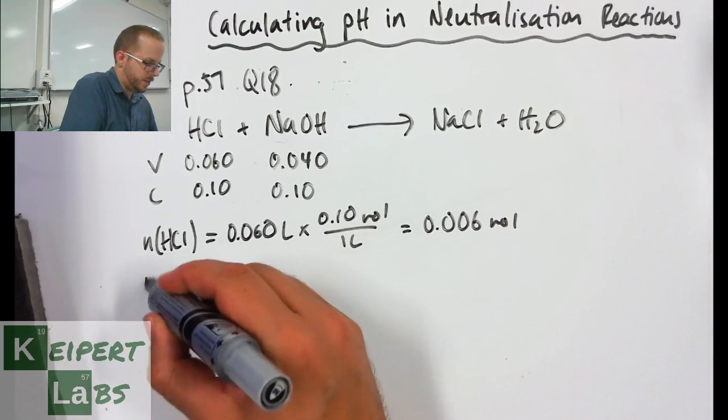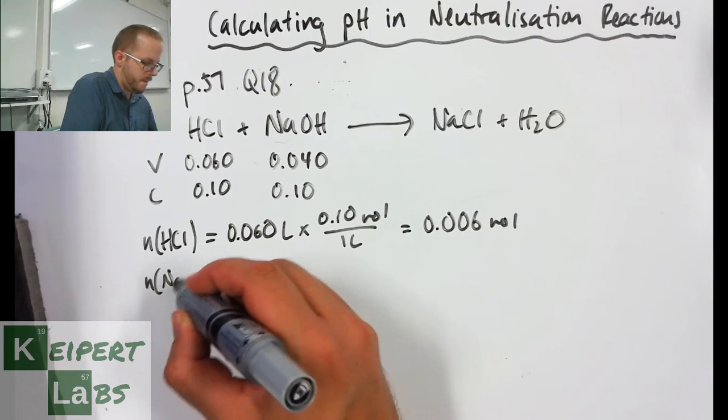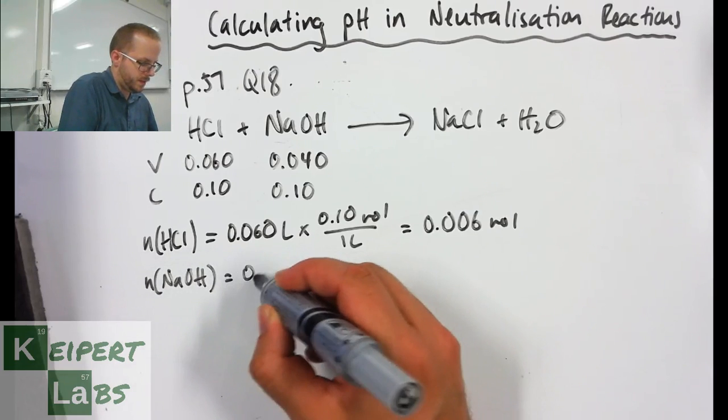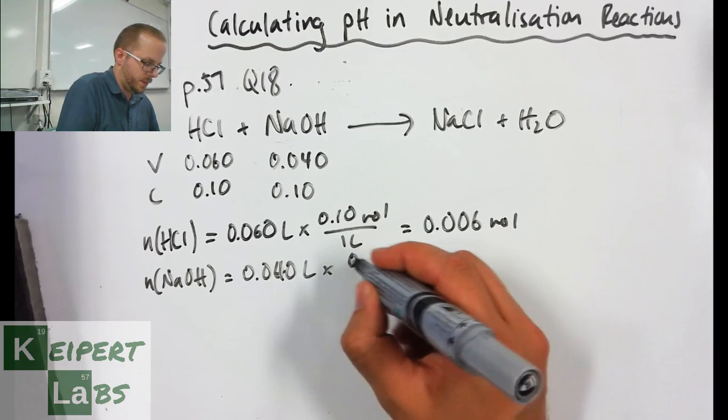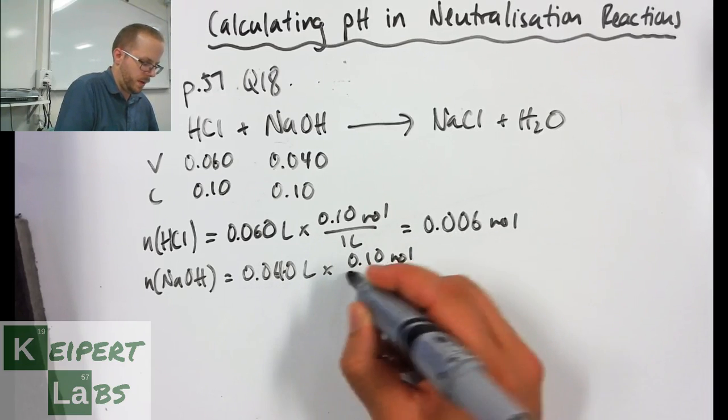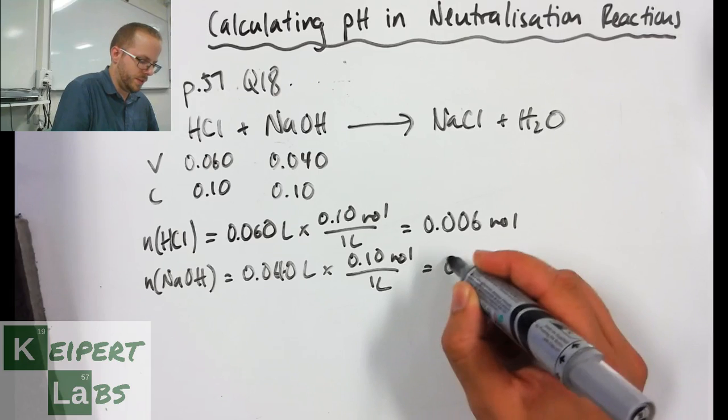The moles of our sodium hydroxide, same sort of process: 40 litres times 0.10 moles for every 1 litre gives us 0.004 moles.